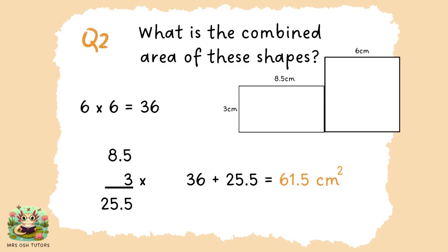You may have noticed that the square was the easiest shape to work out first. Both sides would be 6 centimetres because it's a square. The area is width multiplied by length, so 6 × 6 = 36 cm². Then the area of the rectangle is 8.5 cm × 3 cm. Using column method multiplication of decimals as we did earlier, we put one digit after the decimal point, making 25.5 cm². Adding those two together gives the total area of the combined shape, which is 61.5 cm².